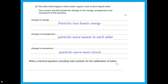Write a chemical equation including state symbols for the sublimation of iodine. Iodine is written as I₂. Sublimation means changing from solid to gas — solid is denoted by (s) and gas by (g). So iodine as a solid changes to iodine as a gas: I₂(s) → I₂(g).